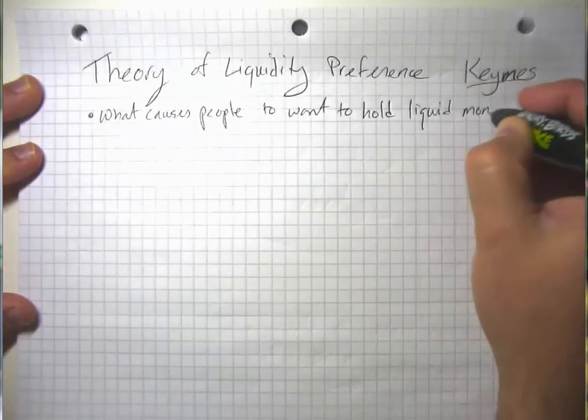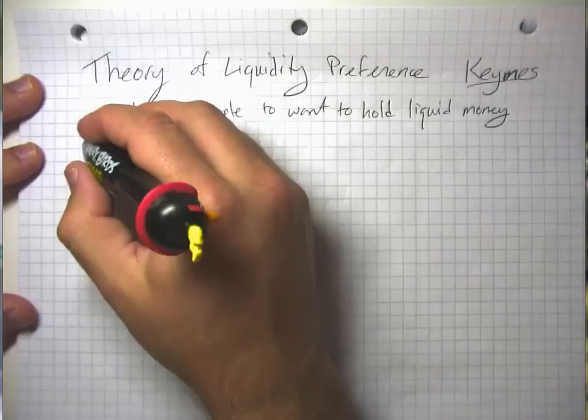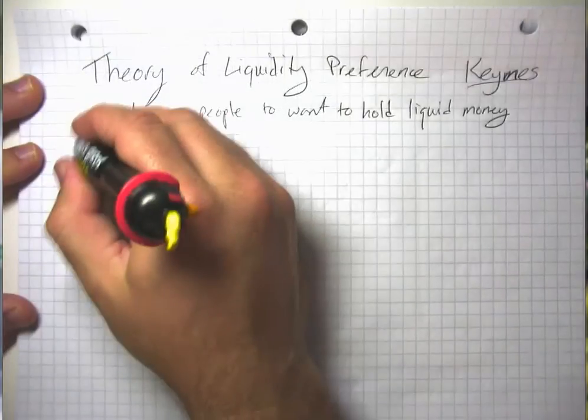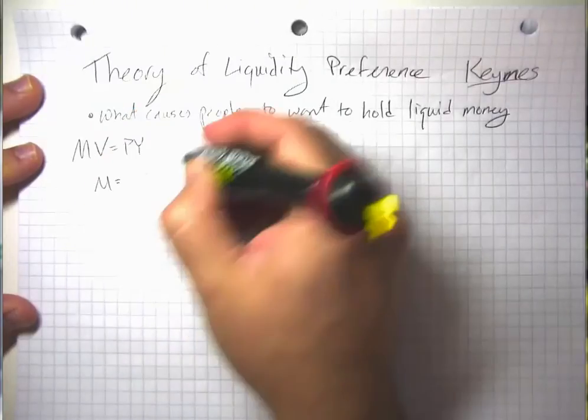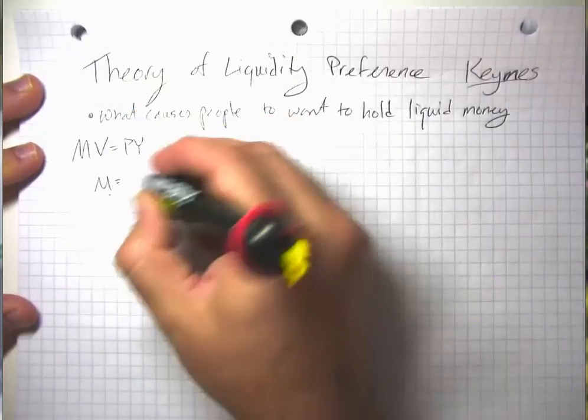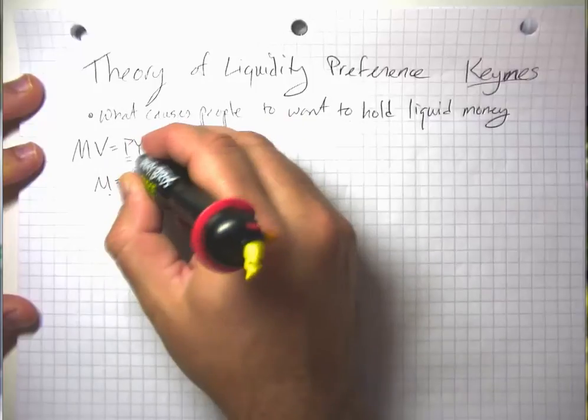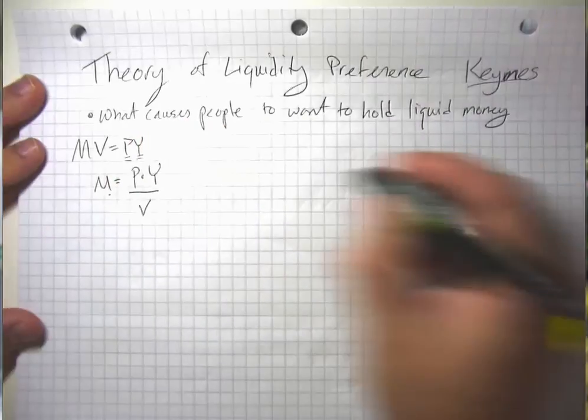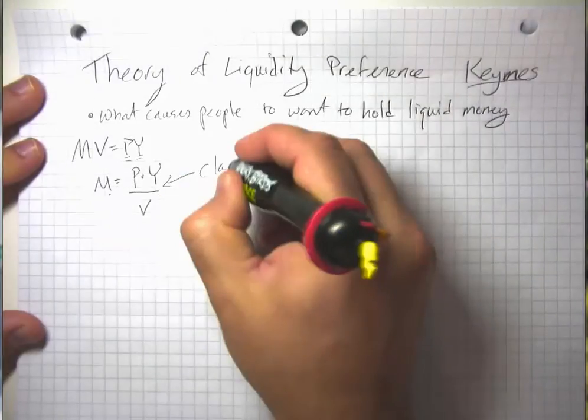Now we already have one way of looking at this that went back to the idea of the classical theory of money demand. And that was the idea that money demand is proportional to the price level and real GDP divided by this idea of the velocity of money. So that's the idea of classical money demand.